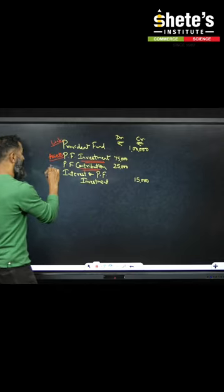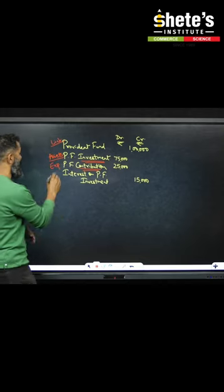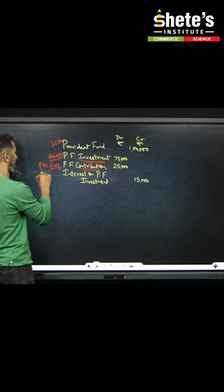Contribution - the government has said that you also contribute in employees' funds. So this is our cost. This means it will go to the debit side of profit and loss account.